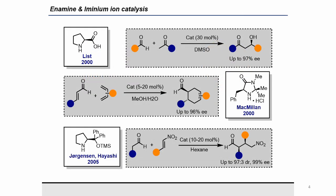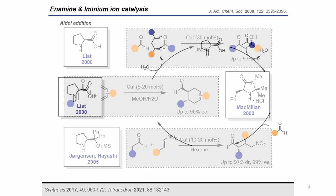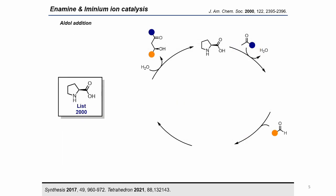Regarding enamine and iminium ion catalysis, we will see the proline-catalyzed enantioselective aldol reaction developed by List, an enantioselective Diels-Alder reaction reported by MacMillan, and some examples of the application of diarylsilylprolinols to the alpha-functionalization of enolizable aldehydes reported by Jørgensen and Hayashi. For each of them, we will see the reaction mechanism focusing on the key step determining the stereoselectivity.